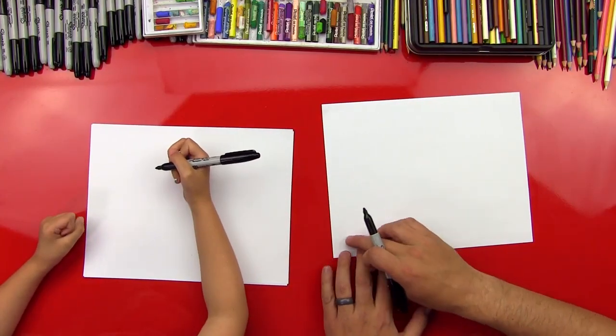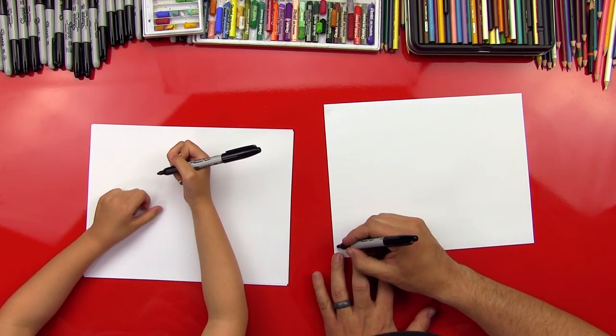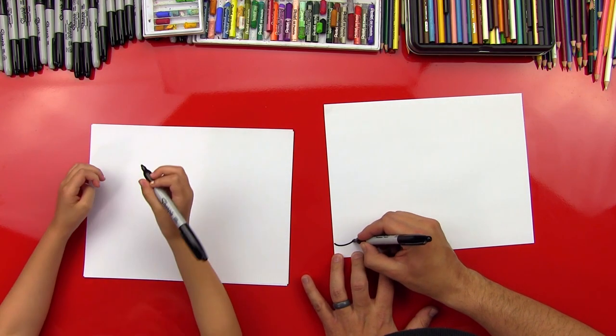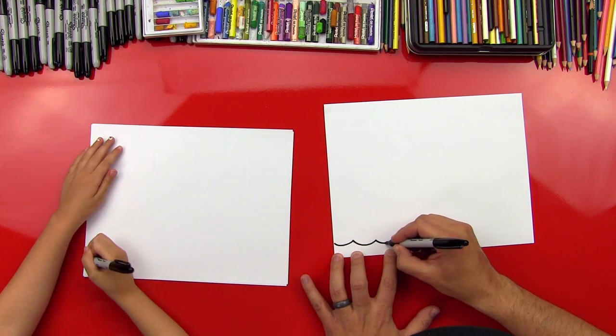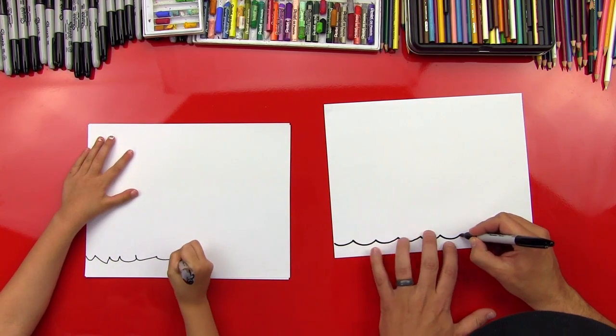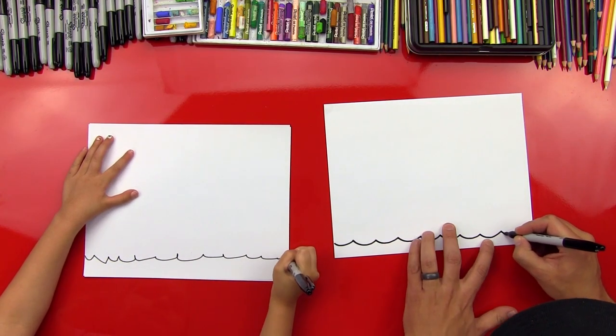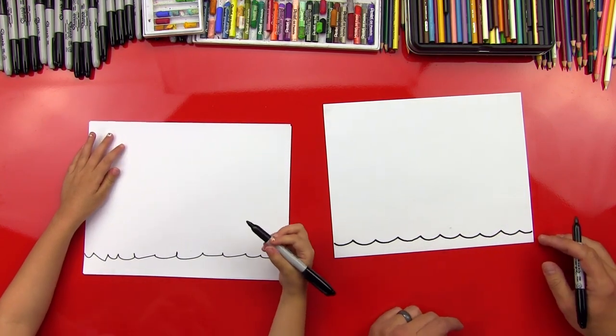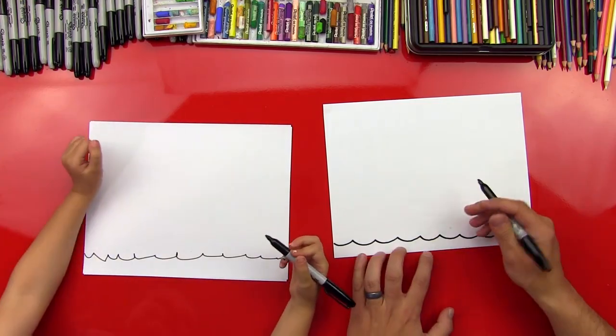We're going to do the water, and we're going to draw it down here at the bottom. You remember how we draw water? We've done it a couple times. We're going to draw a bunch of U's that are connected along the bottom of our paper. You beat me. Good job, Hads. Give me five. Boom. All right.